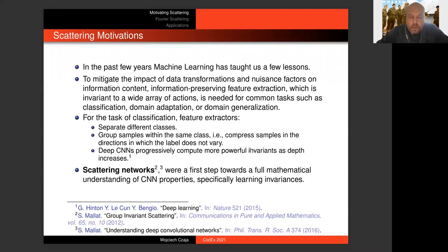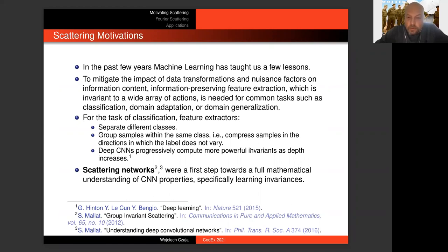This talk about scattering transformations is deeply motivated by recent lessons learned from data science, machine learning, artificial intelligence, and other modern applications of mathematics. First, we have learned that there is actually a lot of data — which I admit was not so obvious to me at one point. I remember as a graduate student trying to find digital images I could process for my dissertation, having to knock on quite a few doors to find someone willing to share a couple of useful digital photographs. Now, obviously, there is an abundance of data.